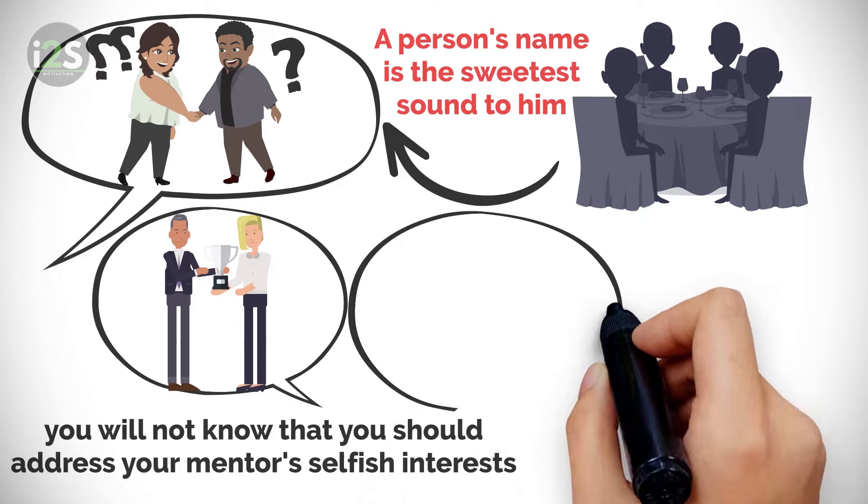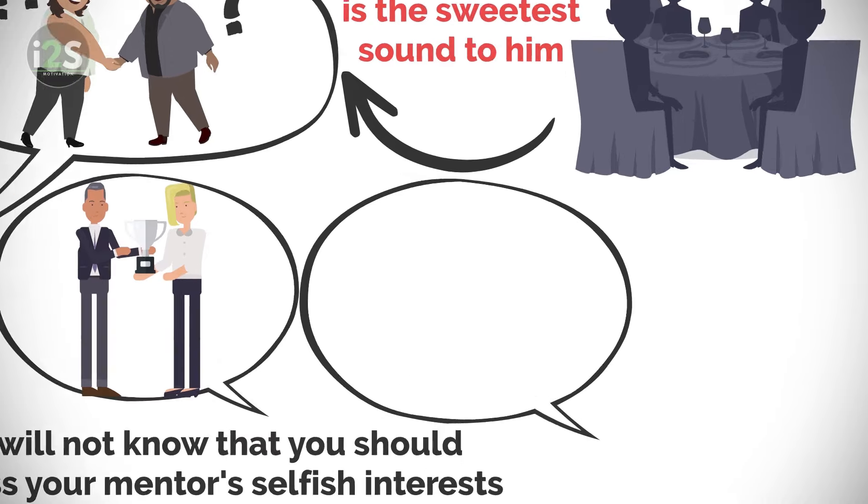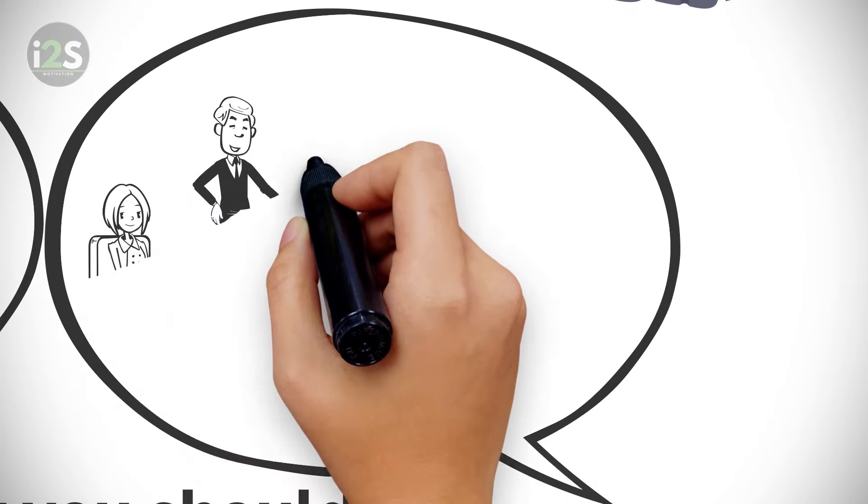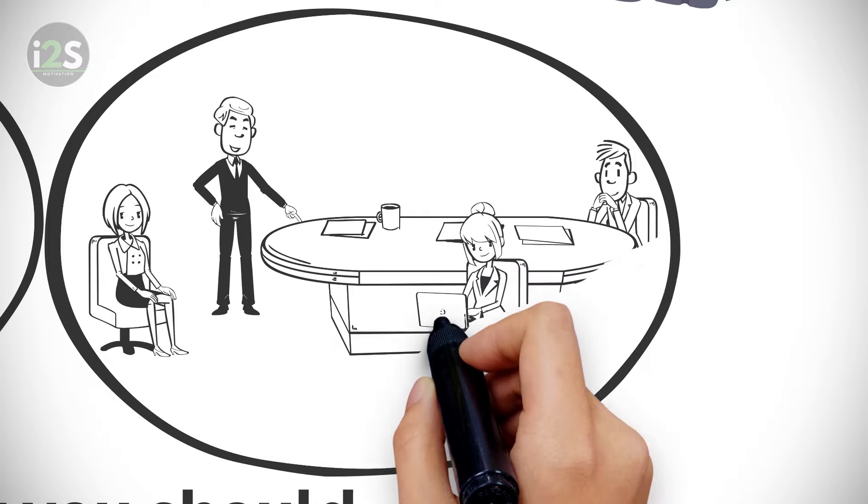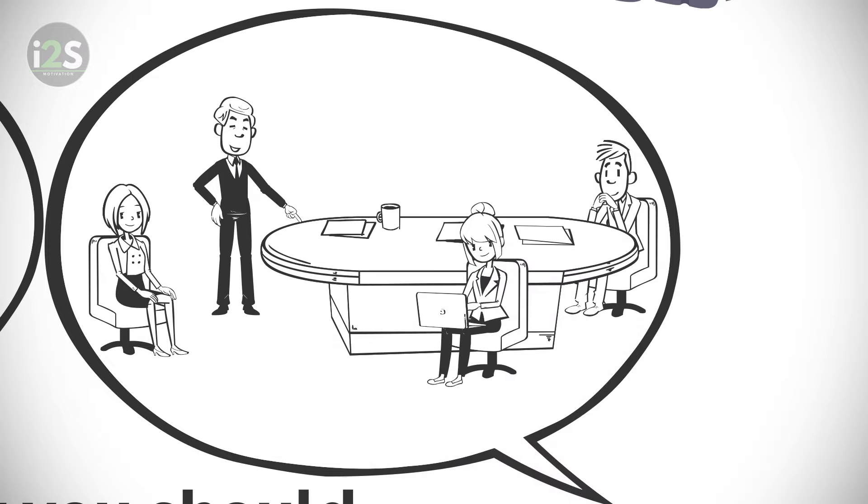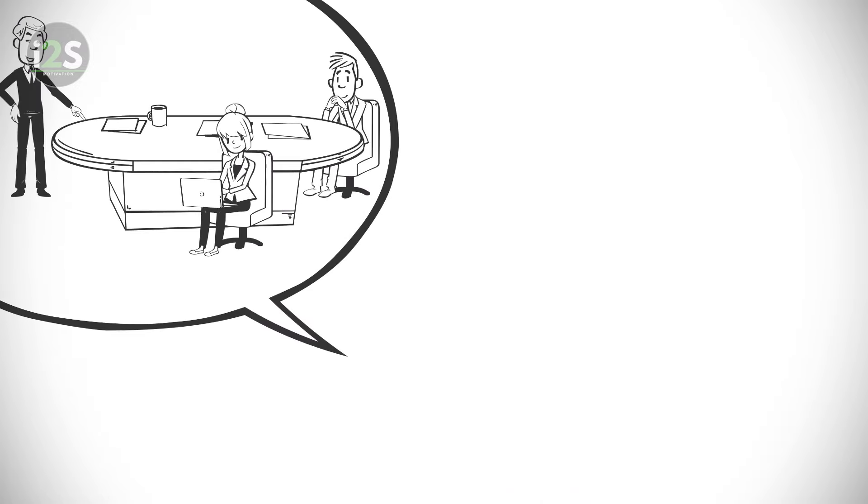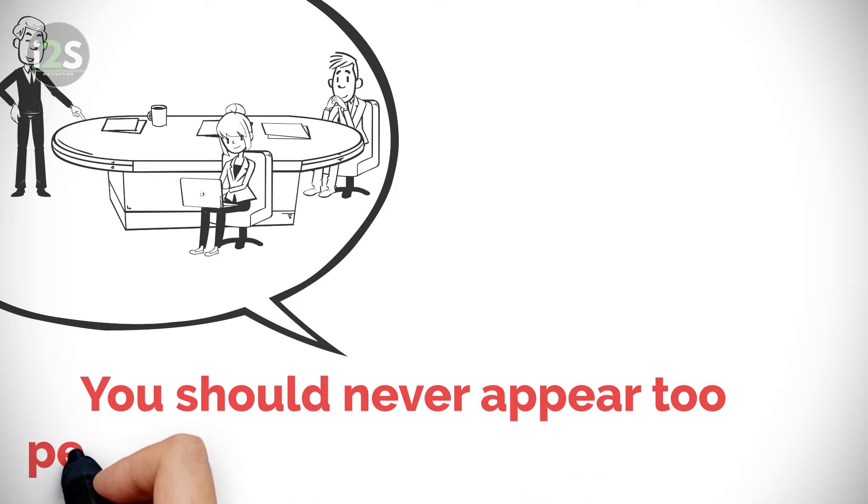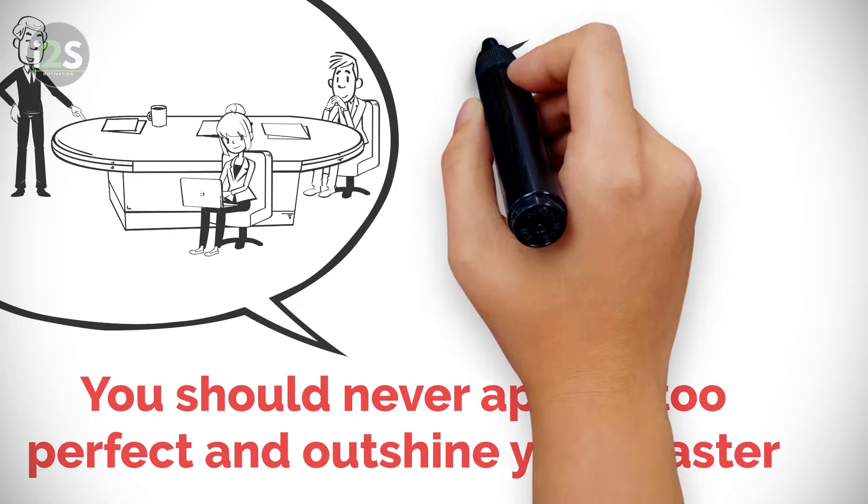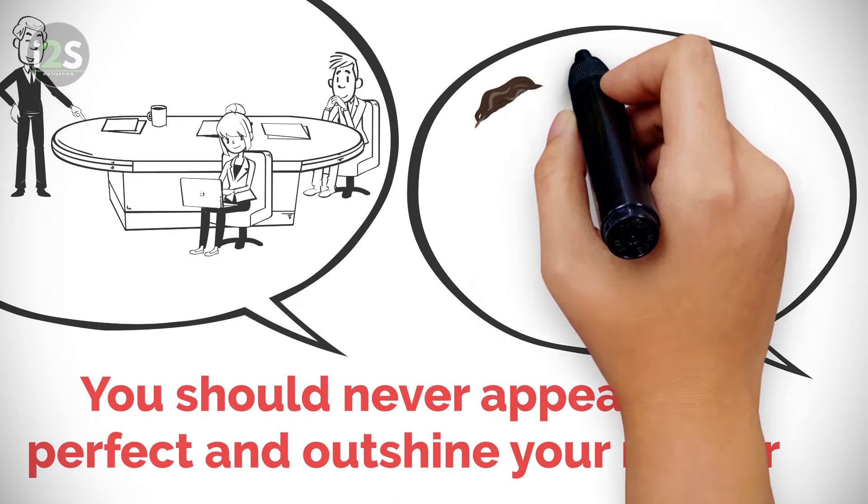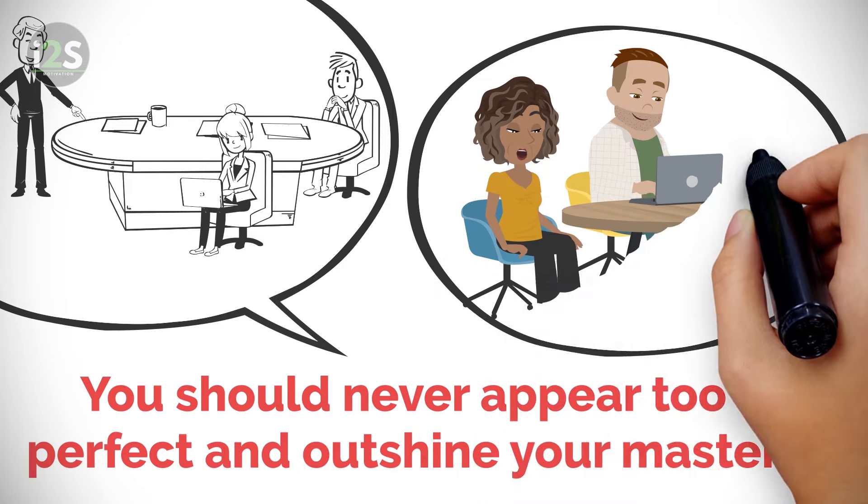Without social intelligence, you will try to show your boss or your new mentor how smart you are. But you don't realize that it can create envy and they will get rid of you at the first opportunity. You should never appear too perfect and outshining your master. Without social intelligence, you will try to look interesting rather than be interested in others.